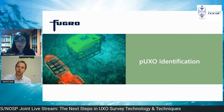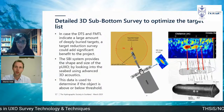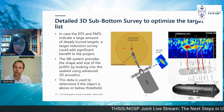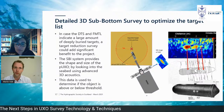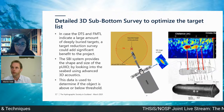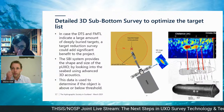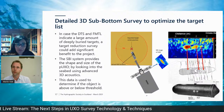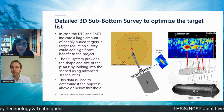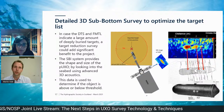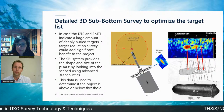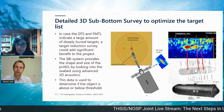Moving on to UXO identification: this is the process of identifying potential UXOs found during the survey. Where the final master target list indicates a large number of deeply buried targets, a target reduction survey could be an option — as Chris from Pangeo presented. The 3D sub-bottom image provides the shape and size of potential UXOs by looking into the seabed, and we use this data to determine if the object is above or below threshold. Everything below threshold is considered non-UXO and left in situ. On the right, you see SBI data correlated to the technical drawing of an LMB mine, which was later positively identified by dredging.